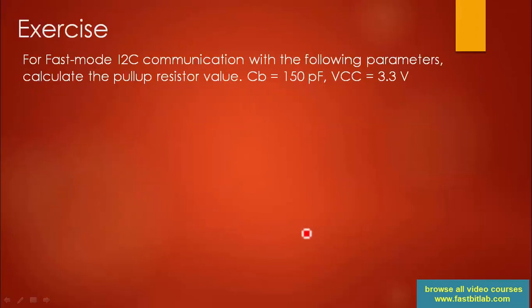Let's consider an exercise: for fast mode I2C communication, calculate the pull-up resistor value given a bus capacitance of 150 picofarads and VCC of 3.3 V. First, how do you calculate bus capacitance? You can use capacitance measurement tools or meters, or by using advanced tools — but you can also model your bus to calculate an approximate value.